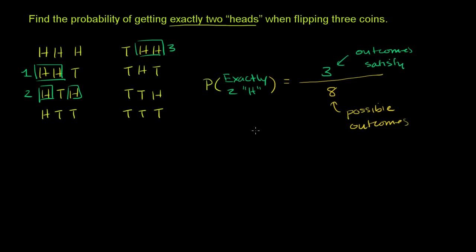So the probability of getting exactly two heads when flipping three coins is three outcomes satisfying this event over eight possible outcomes. So it is 3/8.